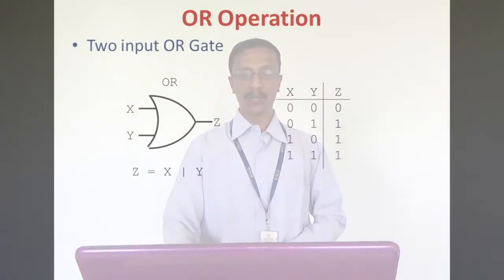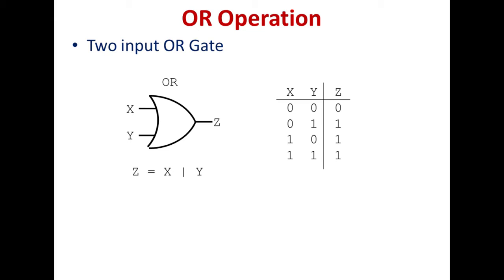Next, we will see the OR operation. The symbol of a two-input OR gate is shown in the figure. The two inputs are A and B and the output is Y. The output of an OR gate is 1 if any one of the inputs is 1. The expression for OR gate is Y = A + B. From the truth table: inputs 0, 0 give output 0; inputs 0, 1 give output 1; inputs 1, 0 give output 1; and if both inputs are 1, the output is 1.